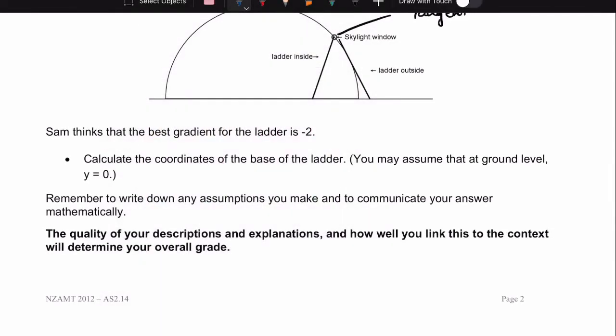Sam thinks the best gradient for the ladder is negative 2. This basically means the gradient equals negative 2.